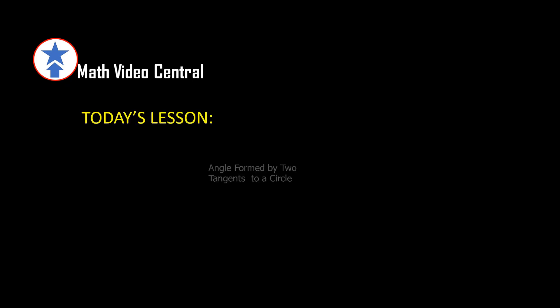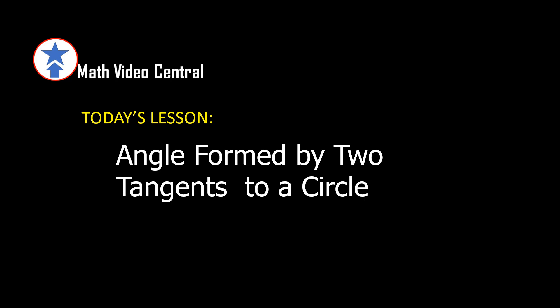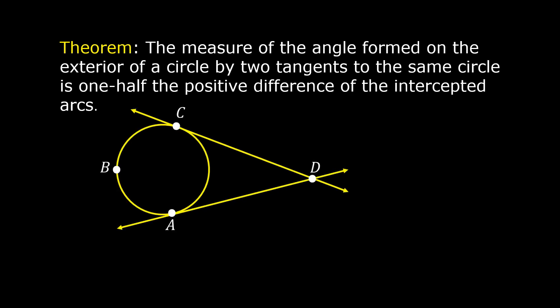This is today's lesson: angle formed by two tangents to a circle. Let us read the theorem. The measure of the angle formed on the exterior of a circle by two tangents to the same circle is one-half the positive difference of the intercepted arcs. Angle ADC is an angle formed on the exterior of the circle by tangent CD and tangent AD.